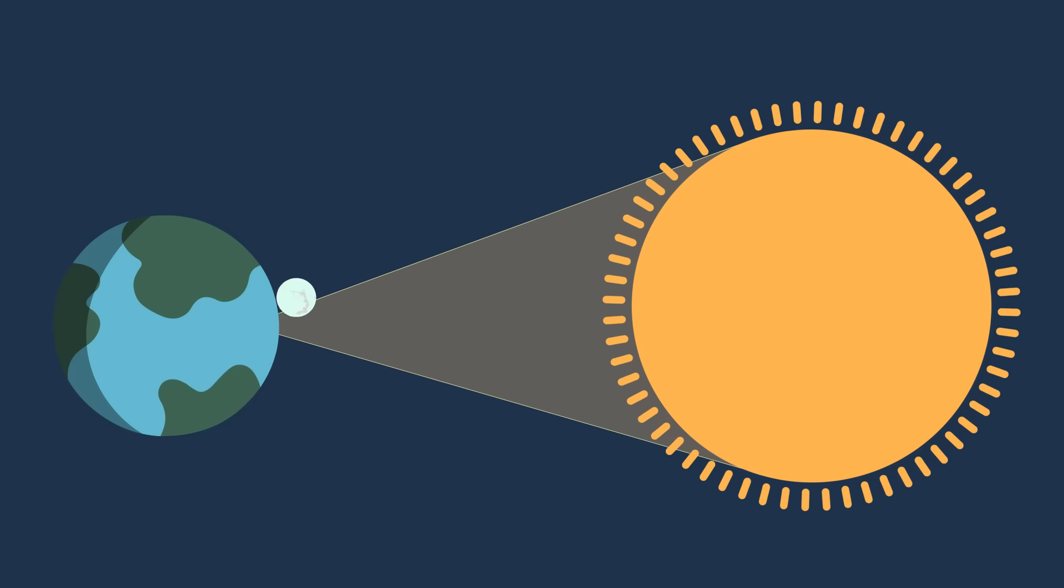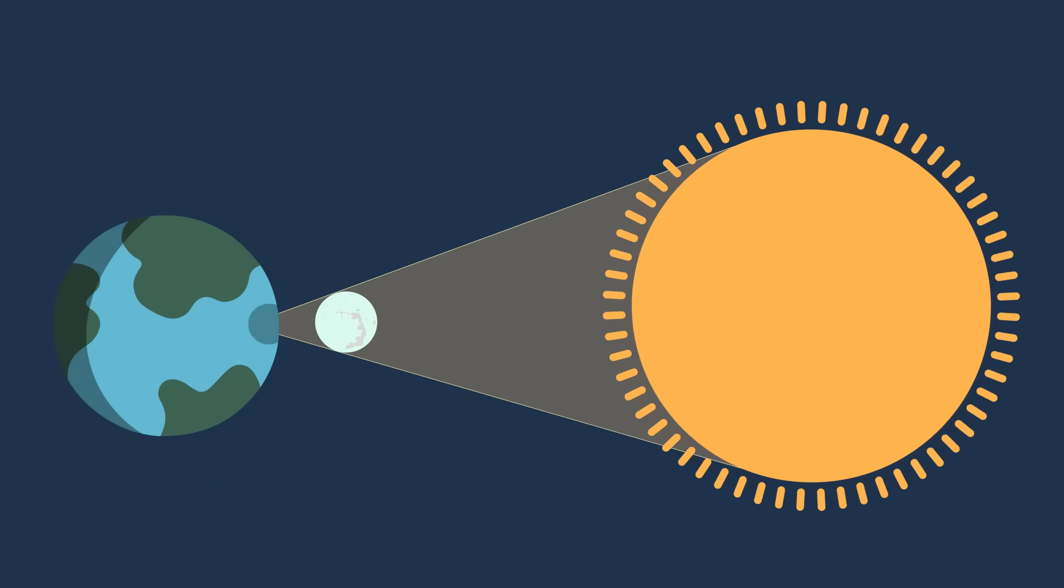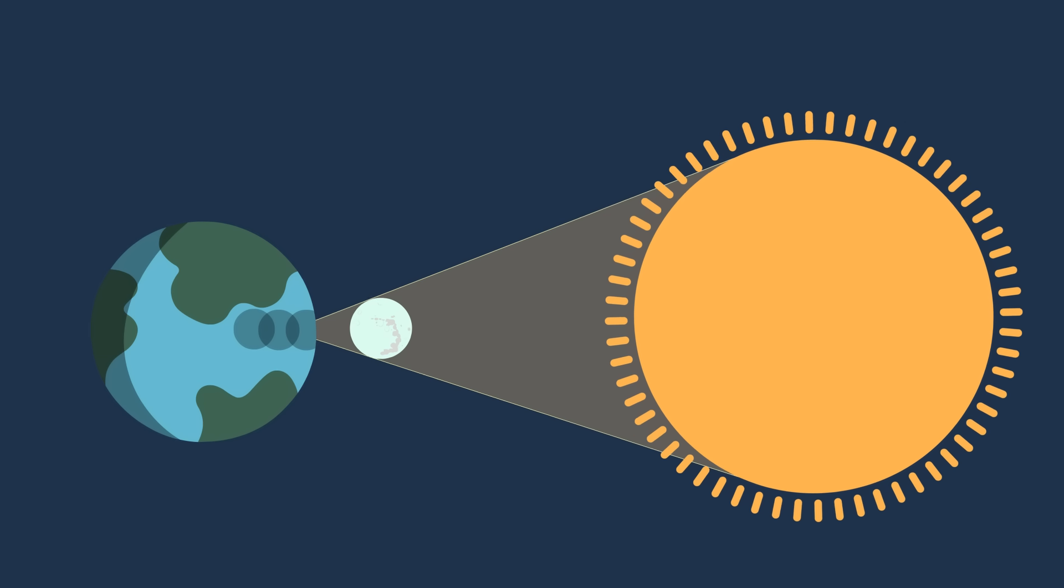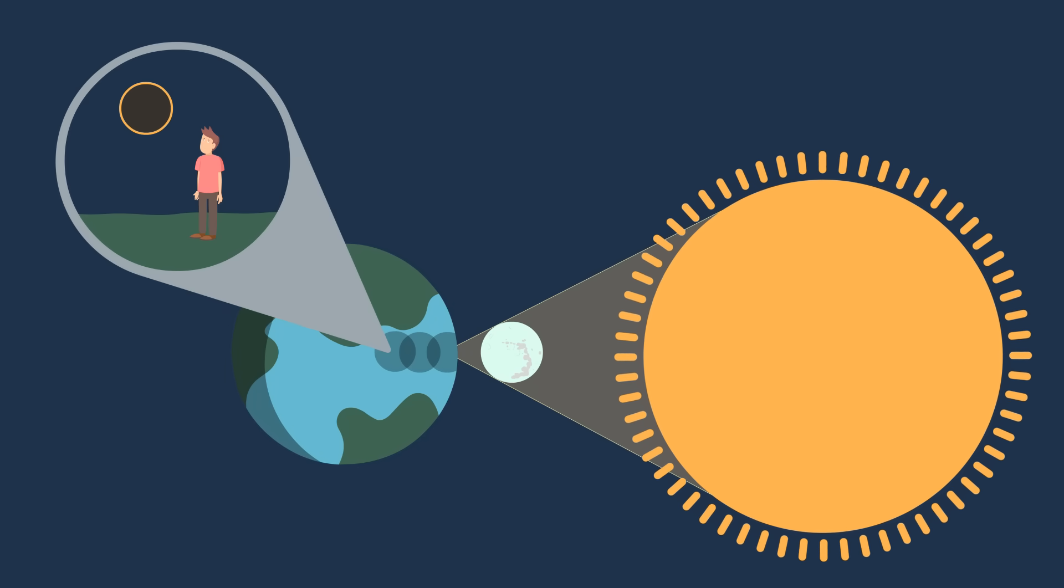Zoom in. A solar eclipse occurs when the Moon comes in between the Earth and the Sun, causing a shadow of the Moon to fall on certain portions of the Earth. From these locations, it appears as if the Sun has gone dark.